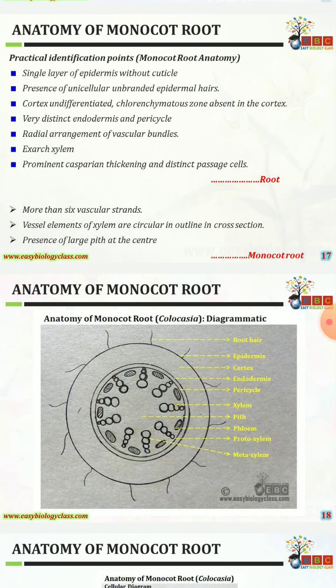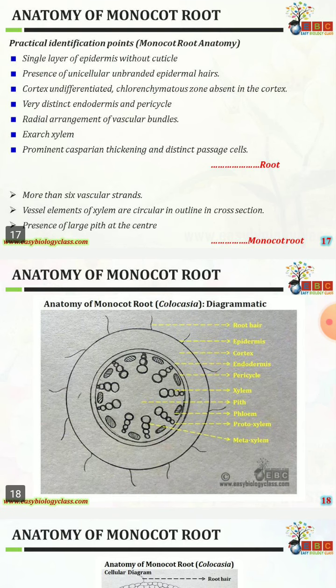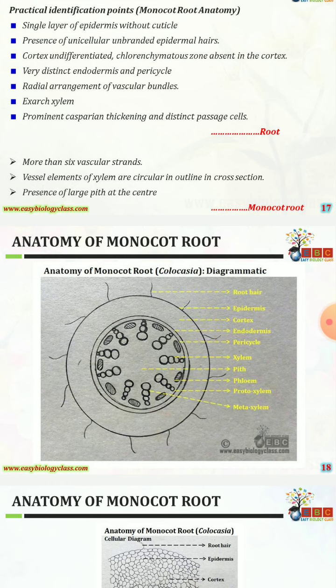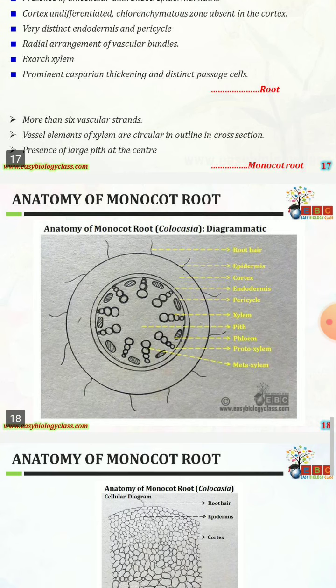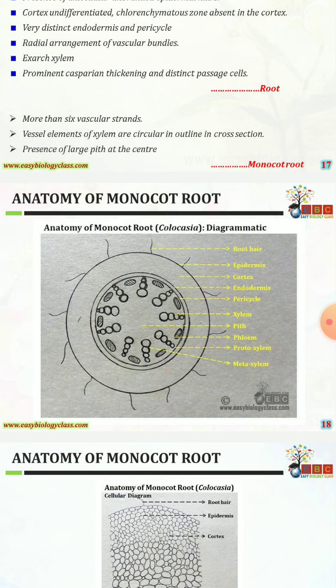Practical identification points for monocot root: single layer of epidermis without cuticle, presence of unicellular unbranched epidermal hairs, cortex is undifferentiated, chlorenchymatous zone absent in the cortex, very distinct endodermis and pericycle, radial arrangement of vascular bundles, exarch xylem, prominent casparian thickening, and distinct passage cells.